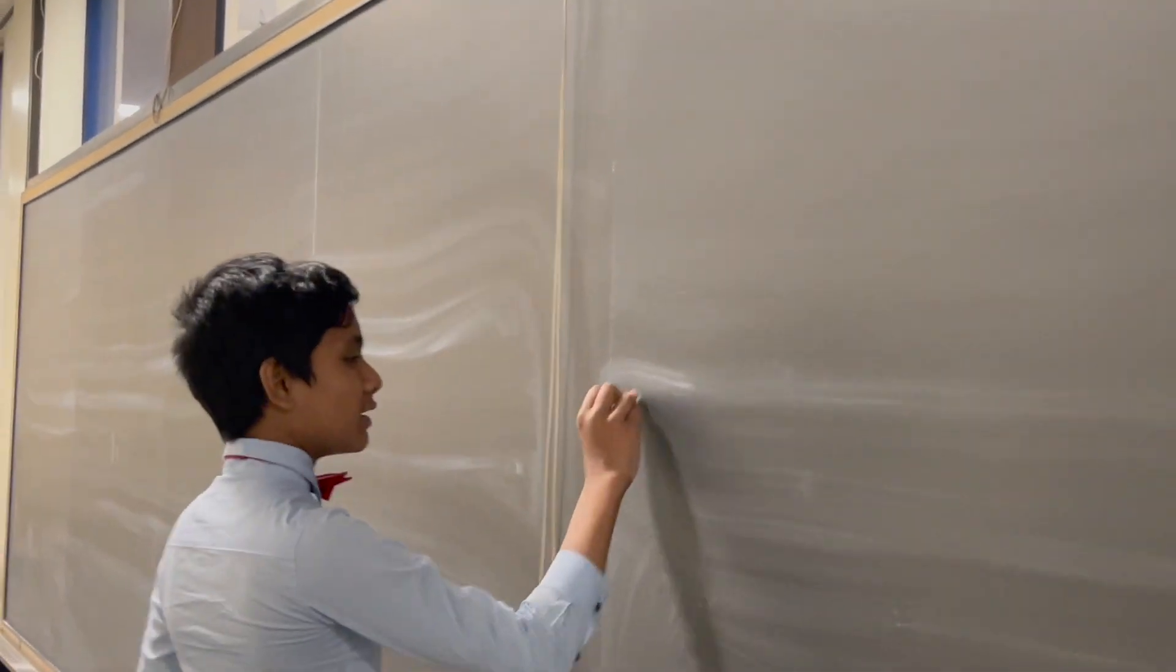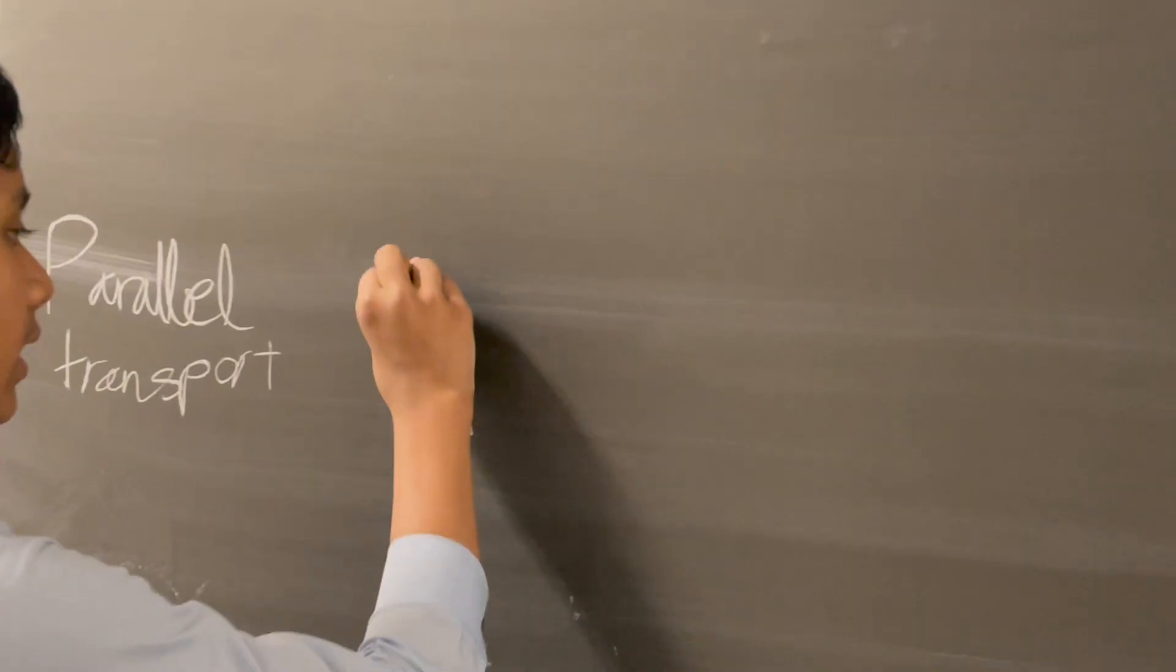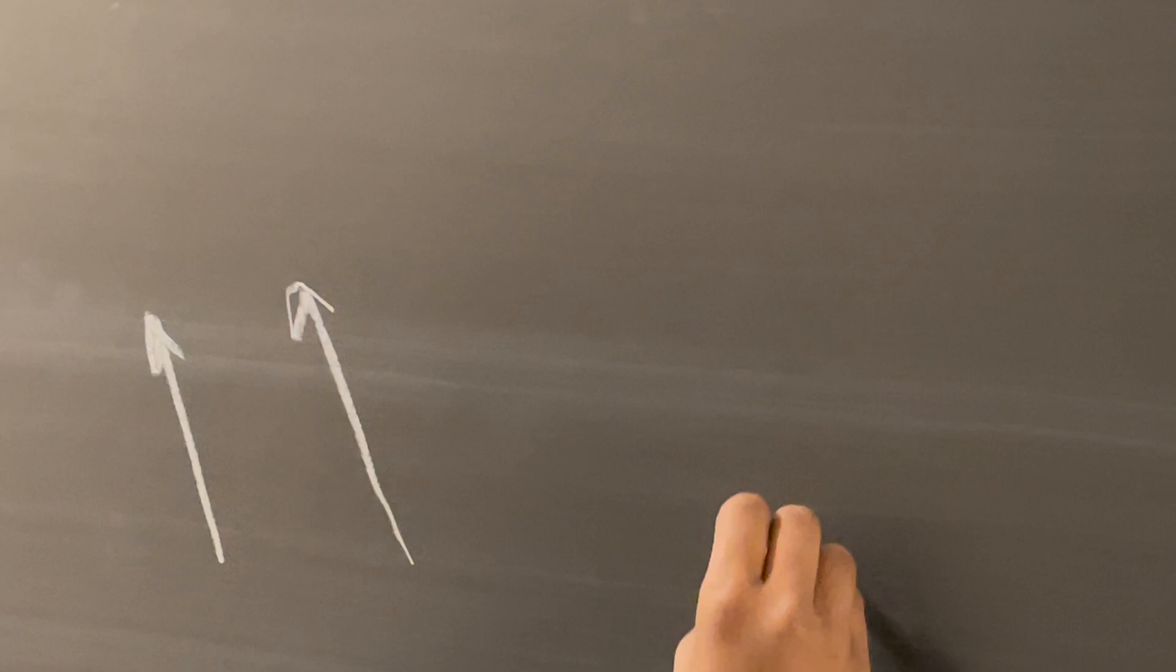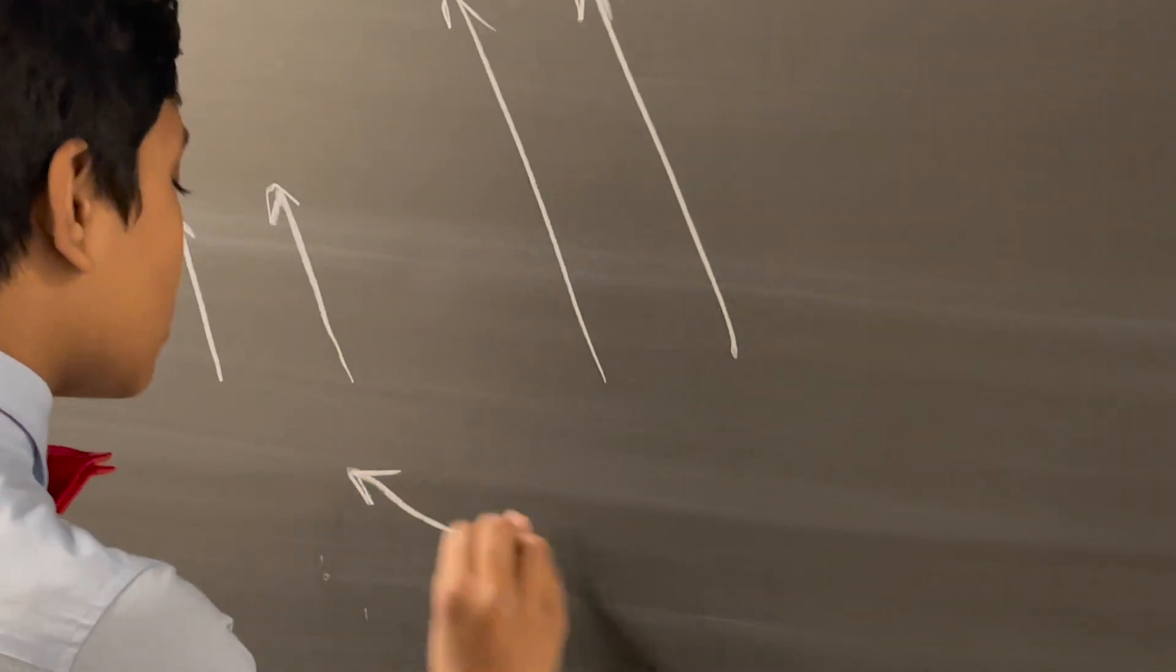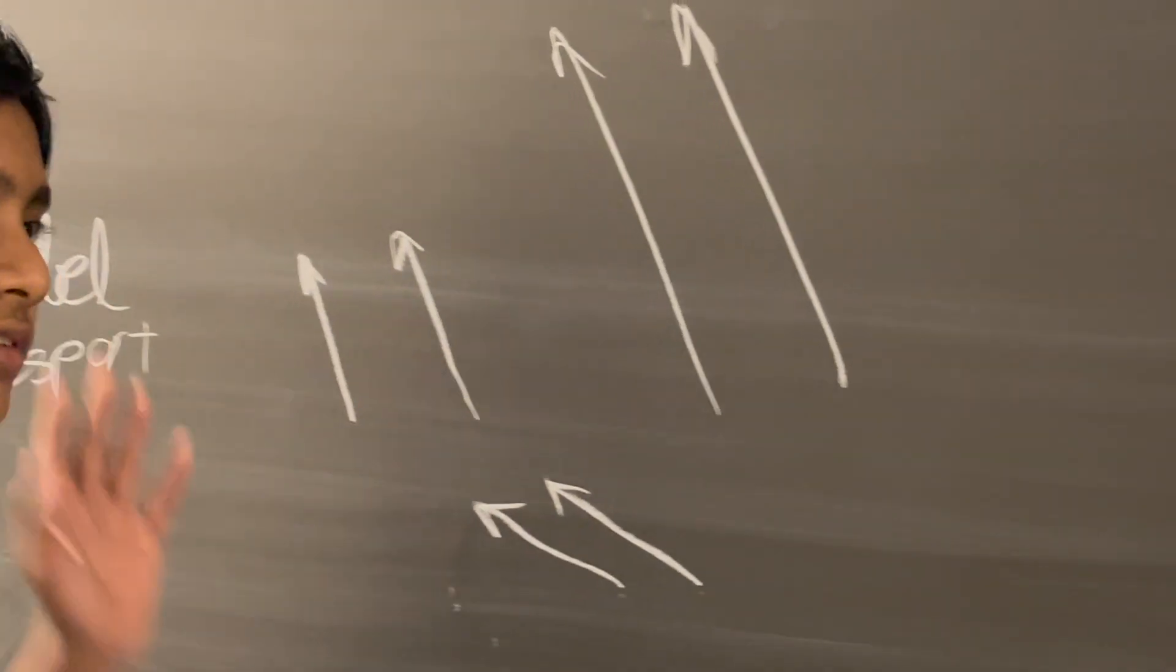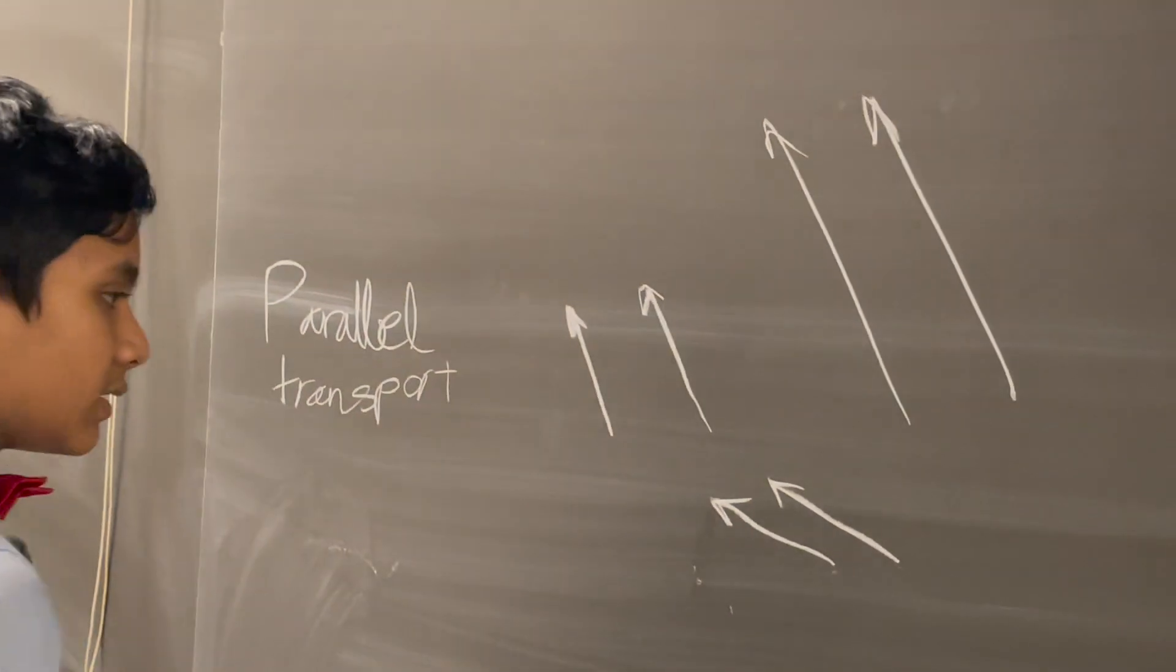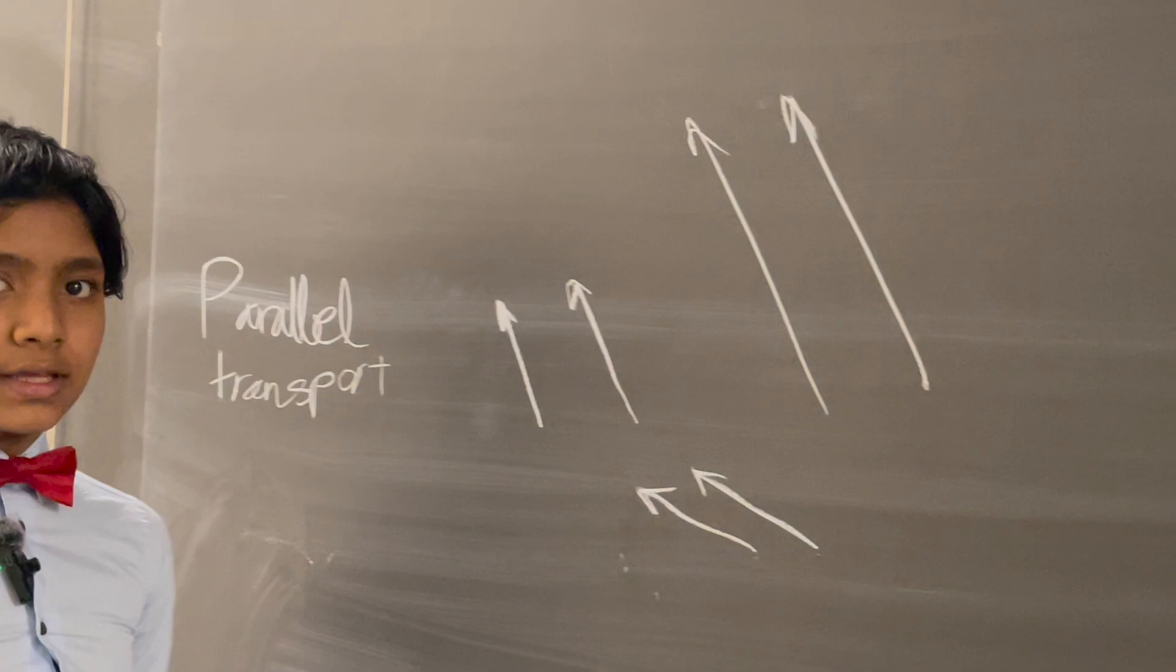So today we talked about parallel transport. If you have two vectors in a normal transformed plane, whether you scale it up or you shear it or you just move the vectors, then they're still going to end up parallel either way.